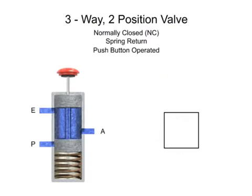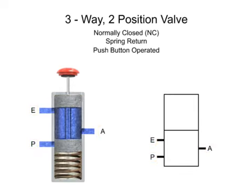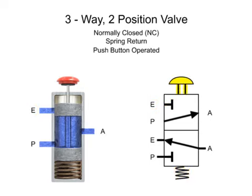The most important applications in fluid power for three-way valves are for directional control. Here we have a typical three-way valve with two operating positions. This valve has an inlet port P, exhaust port E, and output port A. In its normal position, inlet port P is blocked and outlet port A is connected to exhaust port E. The second position allows fluid to flow from pressure port P to outlet port A and blocks exhaust port E. The valve is also spring return and push button operated.